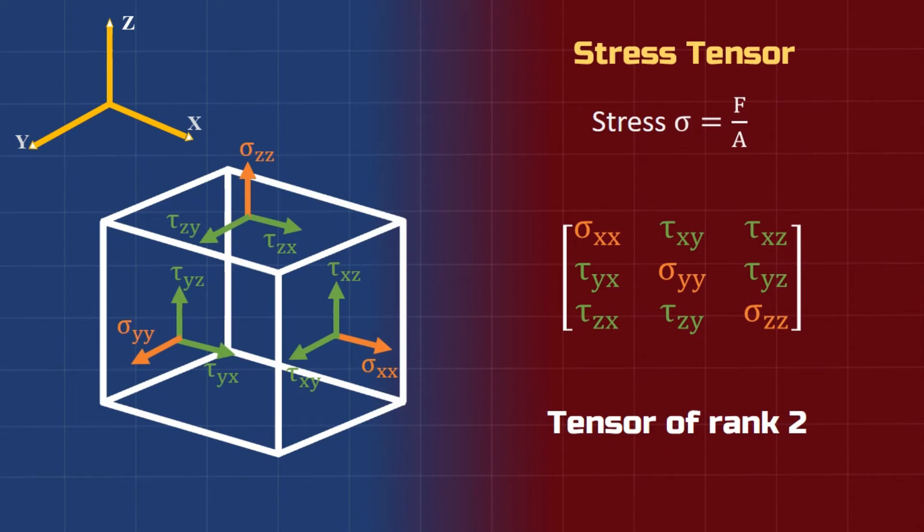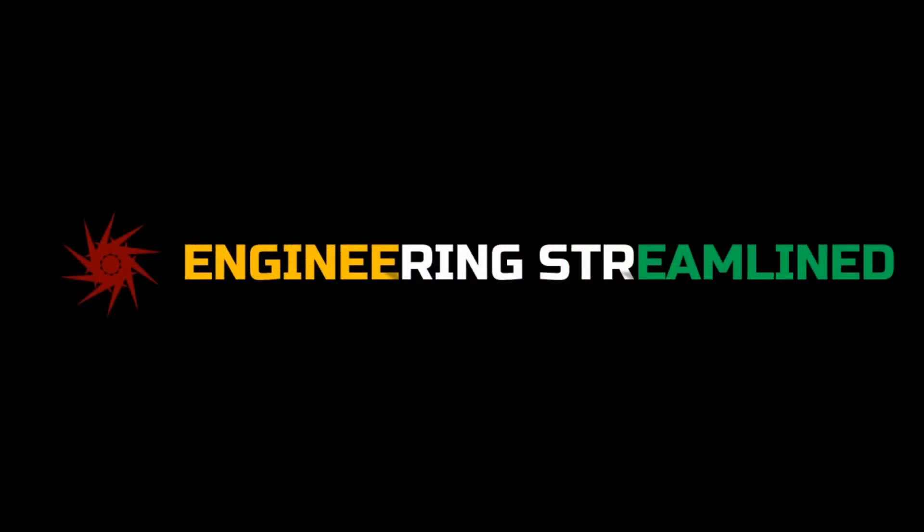So a tensor is an algebraic object that describes a relationship between the sets of algebraic objects related to a space vector. Like you see here, the stress tensor is basically a combination of nine different stress components which are related in a vector space. I hope you like this explanation. Kindly like and subscribe and keep looking for more videos.